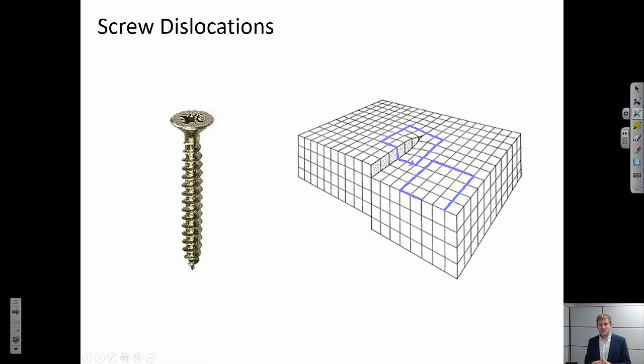Howdy! The purpose of this video is to describe one principle kind of linear defect, and that is a screw dislocation. There are two kinds of linear defects that we talked about so far: edge dislocations and screw dislocations.